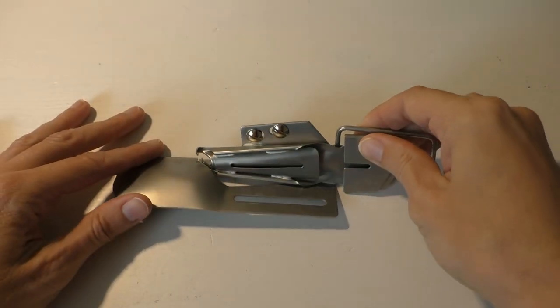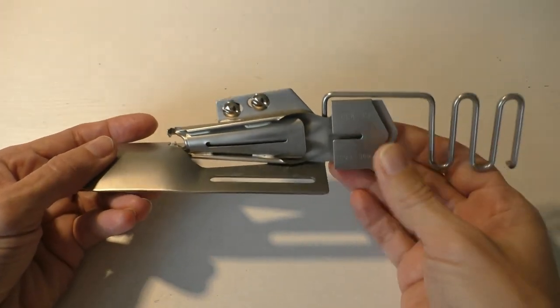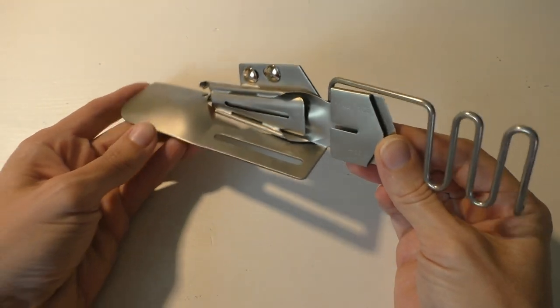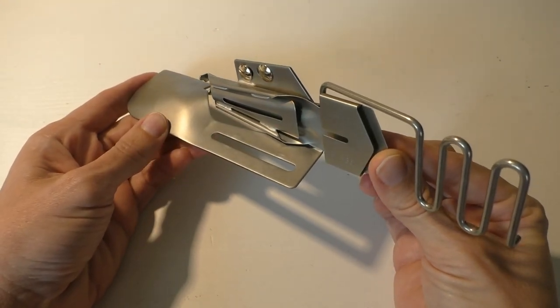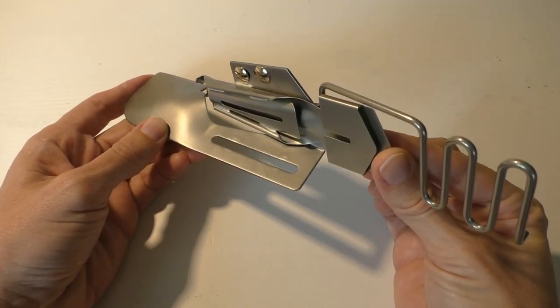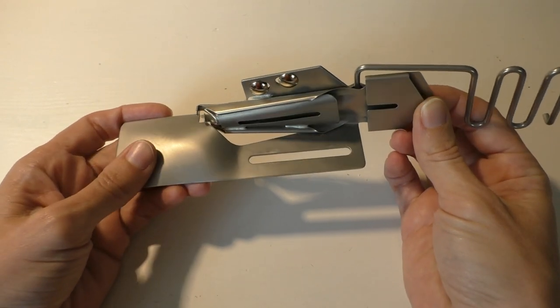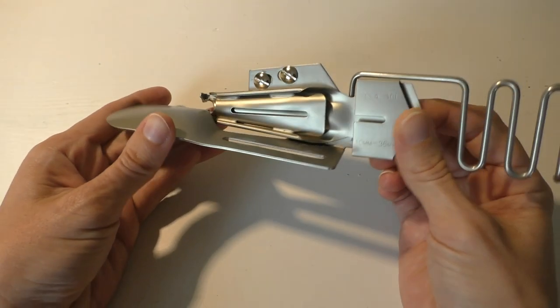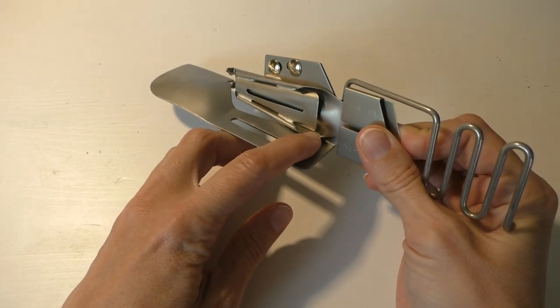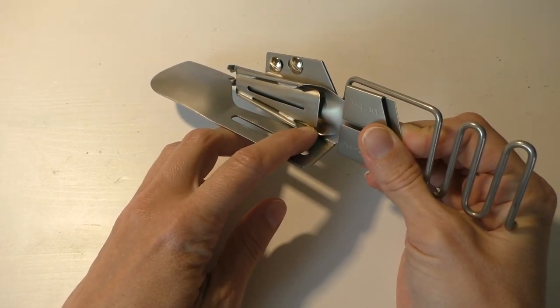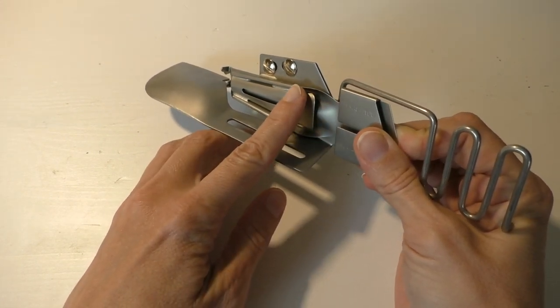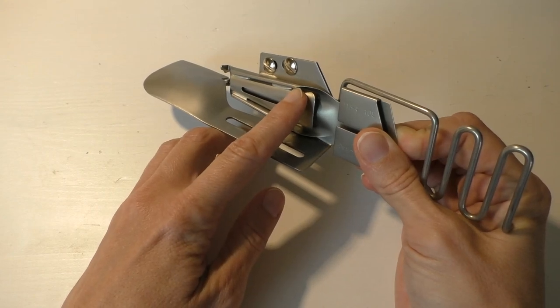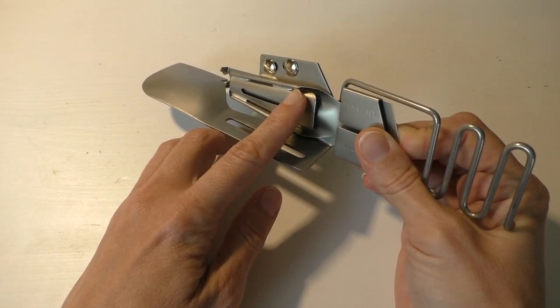Today I'm going to be talking about how to turn this double fold binder, which is a 36mm to 10mm double fold, into a single fold, which means that the underneath edge remains a raw edge, while you have a folded edge on the right side of your fabric, on the right side of your project.